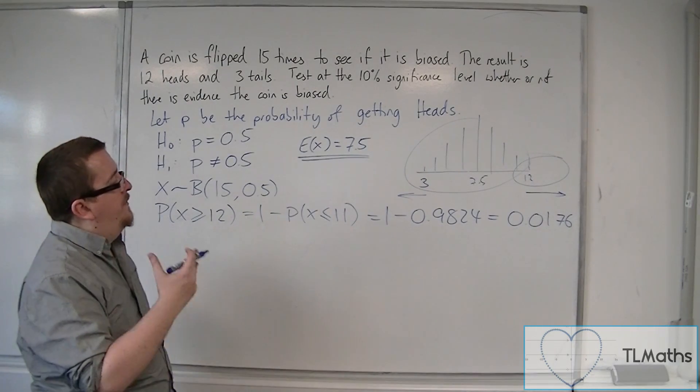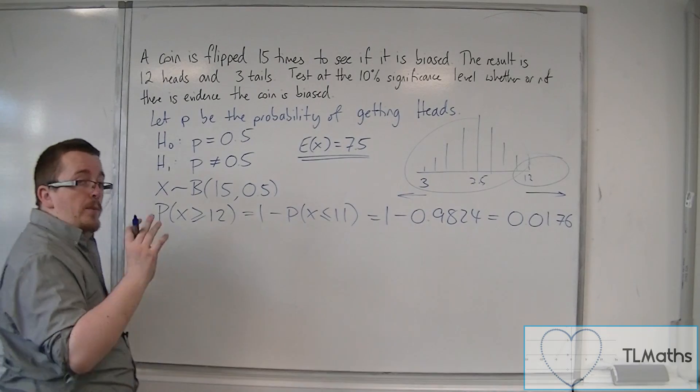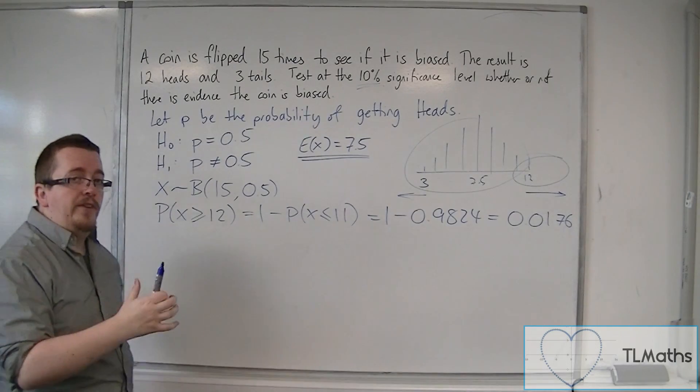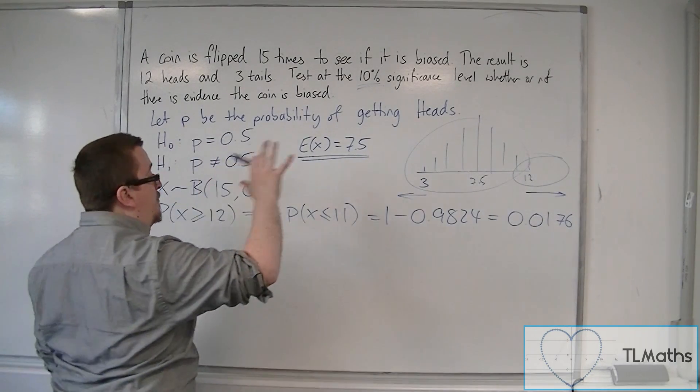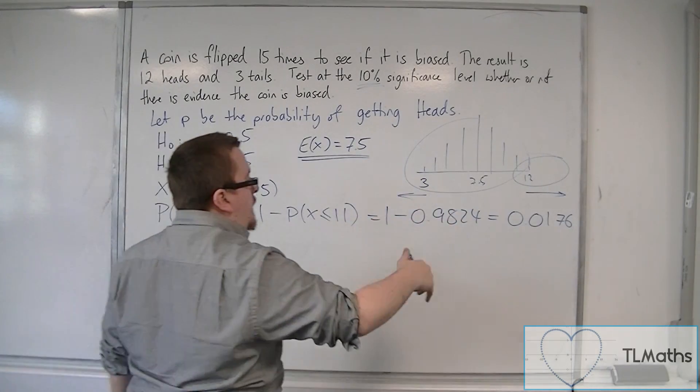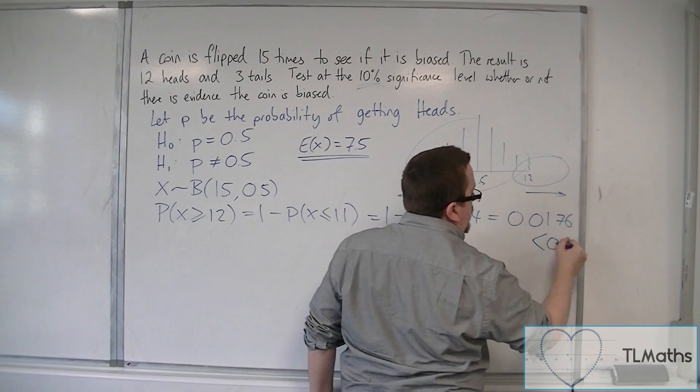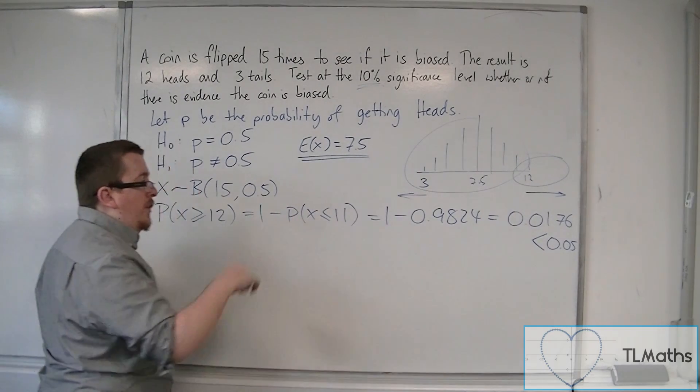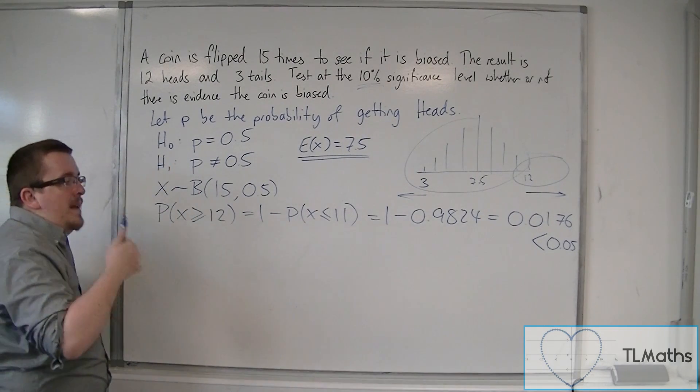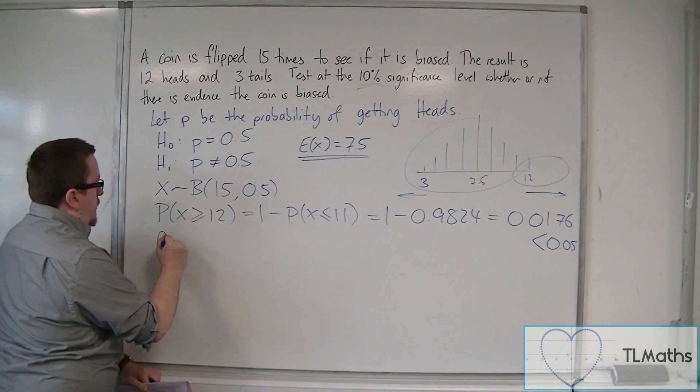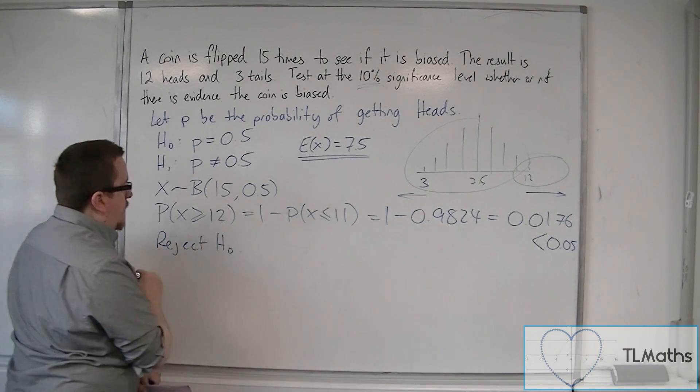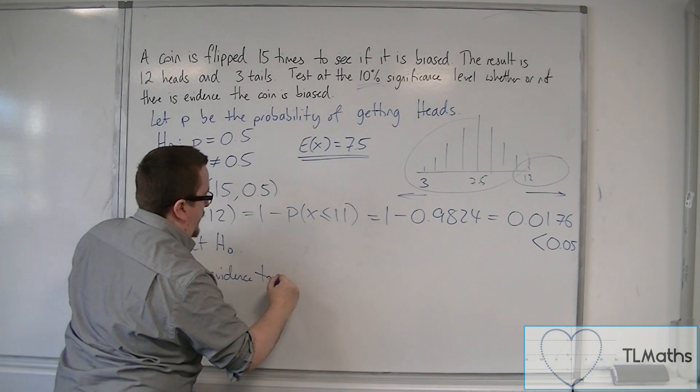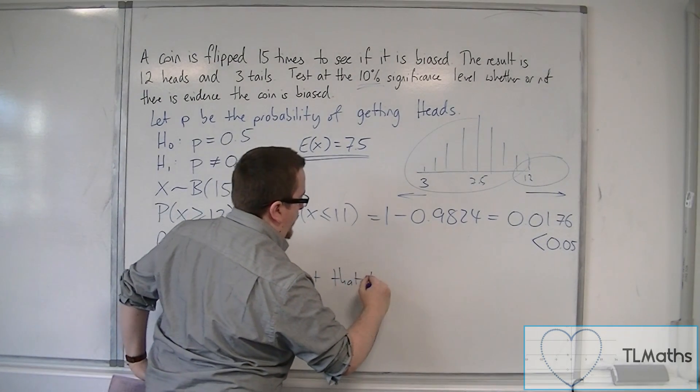Now, 0.0176, what are we comparing it against? We're not comparing it against 10%, because we're looking at a two-tailed test, we need to halve that, because we're looking at 5% at one end and 5% at the other end. And so we compare this with 5%. Either way, it's still less than 5%. And so, because it's less than 5%, that would mean that we have to reject H0. And so there is evidence to suggest that the coin is biased.